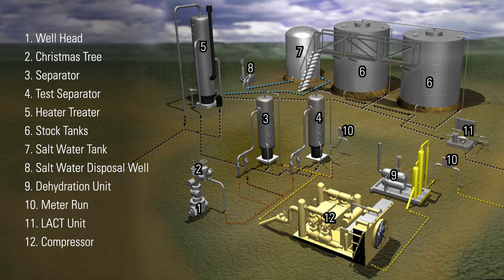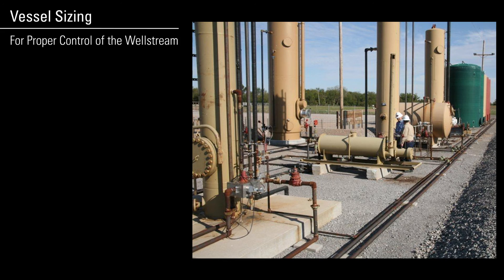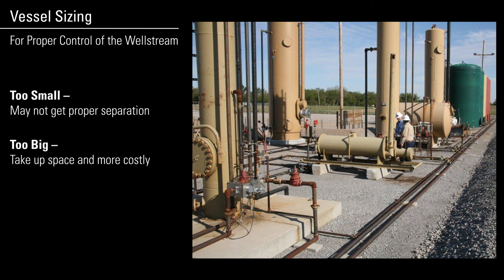This rendering shows what different types of equipment might be needed on a single location to make resources sellable. The goal of a producer is to get their product to market as safely as possible with the least amount of expense. The size of the vessels need to be calculated in order to provide proper control of the well stream. If they are too small, they may not get the proper separation they need. If they are too big, they may be taking up unnecessary space and are more costly to make.